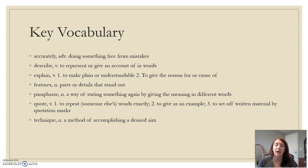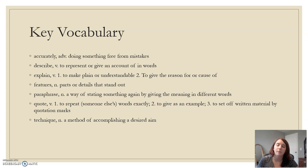Some key vocabulary: accurately — doing something free from mistakes. Describe — to represent or give an account of in words. Explain — to make plain or understandable, or to give the reason for or cause of. Features — parts or details that stand out. Paraphrase — a way of stating something again by giving the meaning in different words. To quote — to repeat someone's words exactly, or to set off written material by quotation marks. And technique — a method of accomplishing a desired aim.